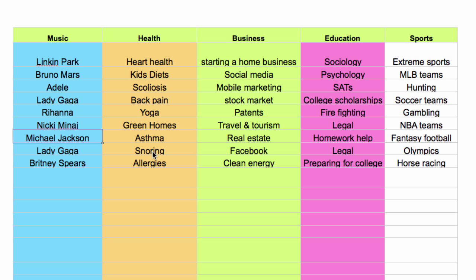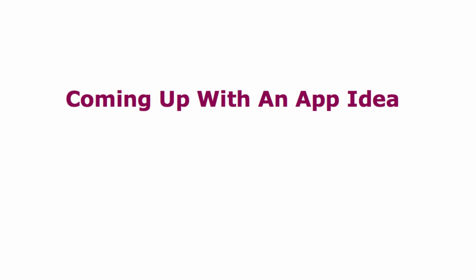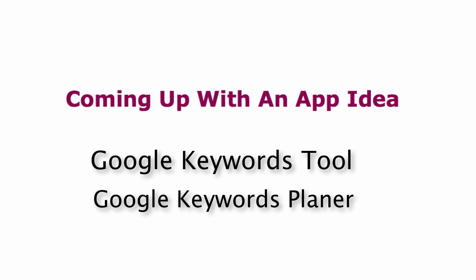Google also has a very nice tool to check how many people are searching for a particular niche. I'm talking about Google Keyword Tool, also known as Google Keyword Planner. Just type it into Google and have a look at how useful it can be for determining what's typed the most and what's popular in a certain category.